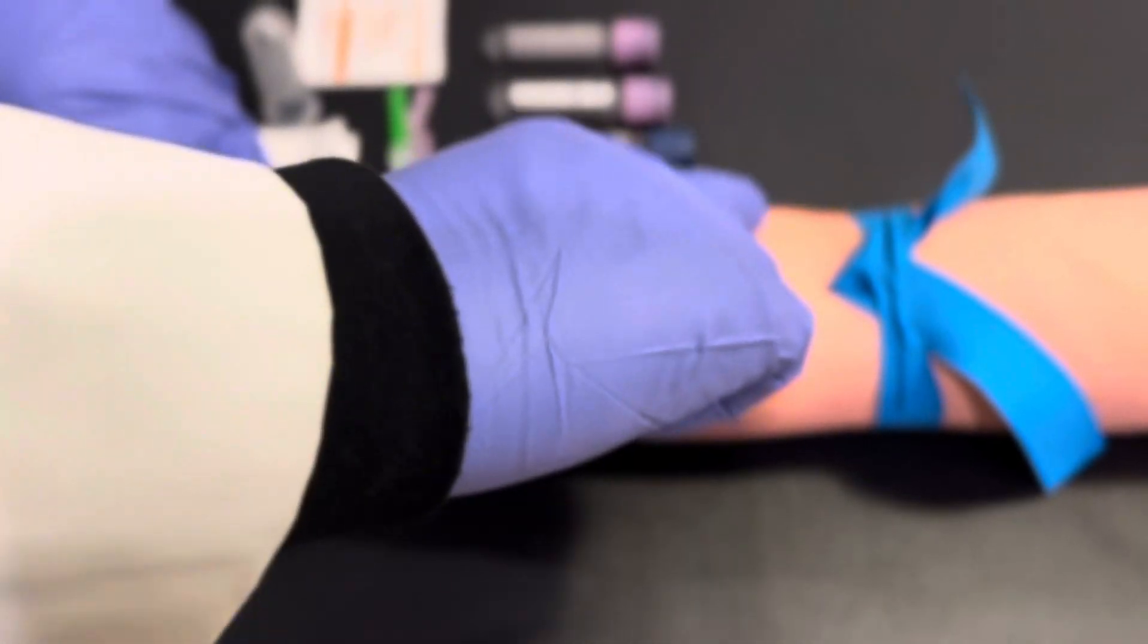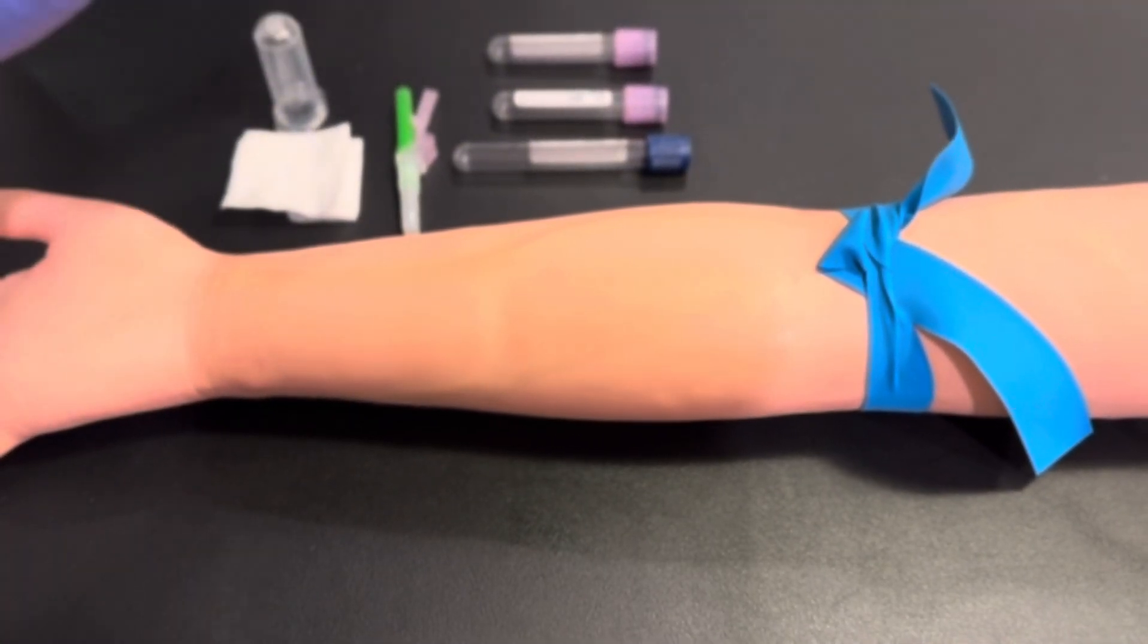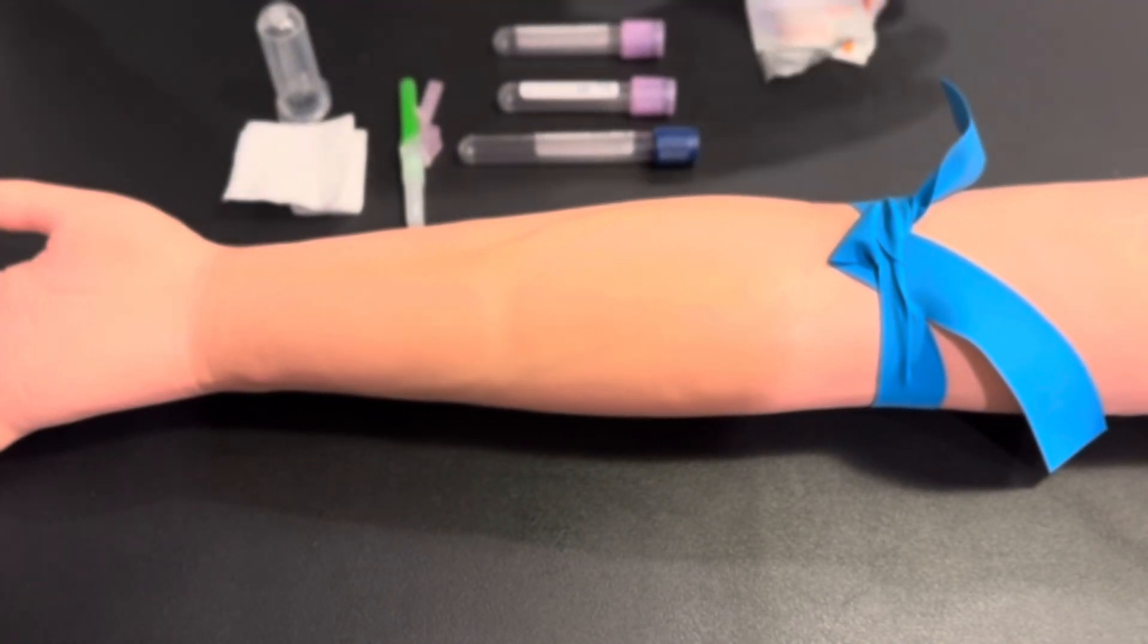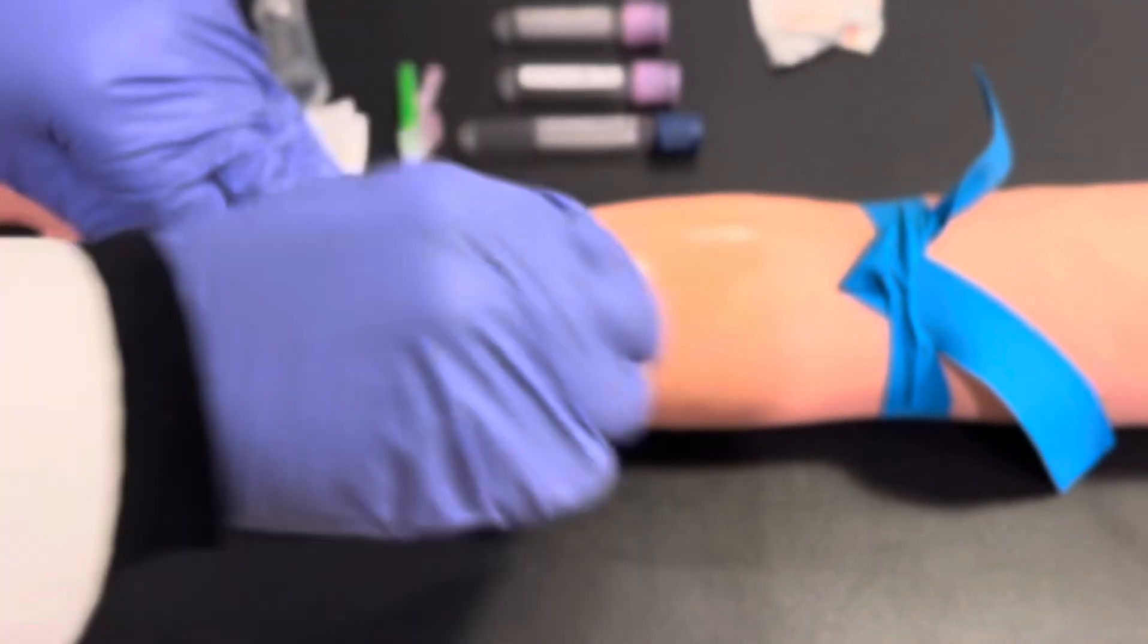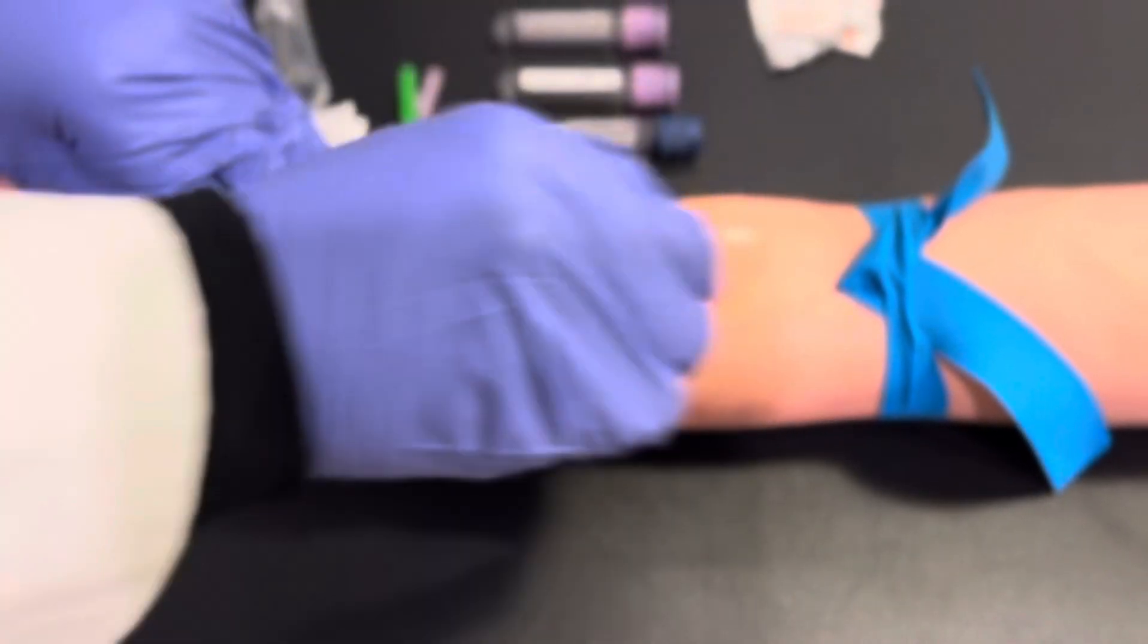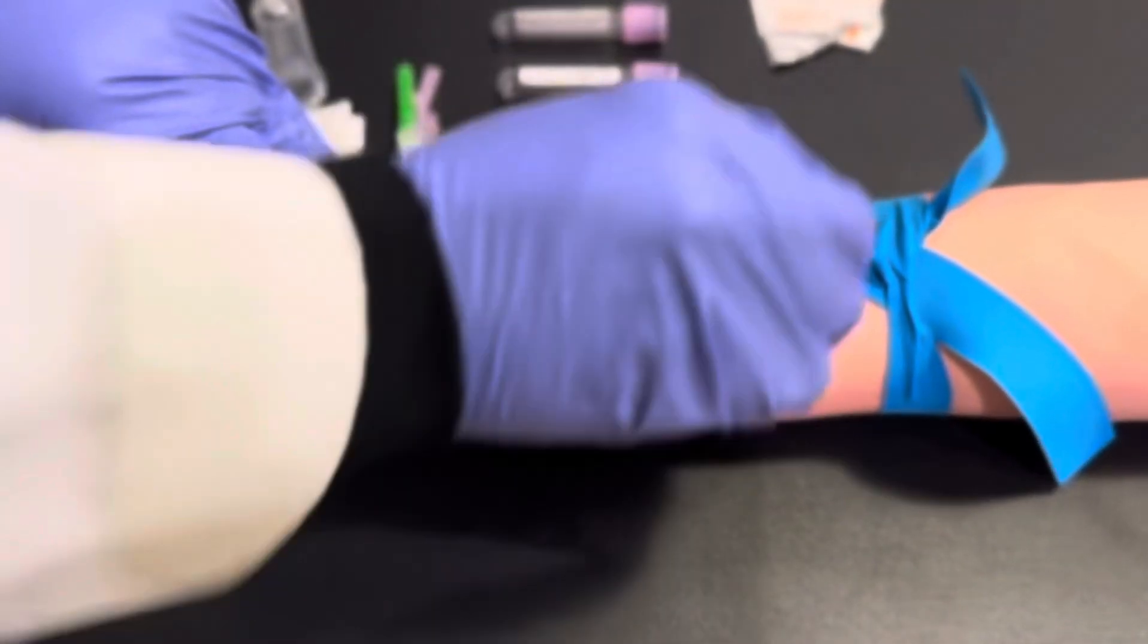Palpate for the vein, trying to locate either the median cubital vein, the cephalic vein, or the basilic vein. Clean the site in concentric circles with 70% alcohol and allow the site to dry.